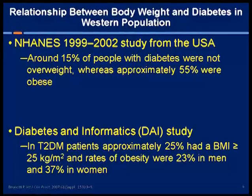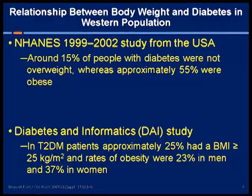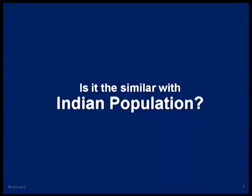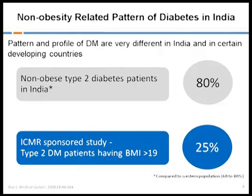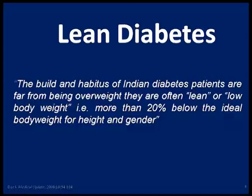The NHANES study of 1999–2002 from the US showed that around 15 percent of people with diabetes were not overweight, whereas approximately 55 percent were obese. This was reiterated in other studies. In the Indian context, BMI above 25 is seen in less than 10 percent, so we have far more lean type 2 diabetic patients. An ICMR-sponsored study by Dr. S. Ghosh from Kolkata found that obese type 2 diabetics were only 25 percent — a vast difference from the western data.